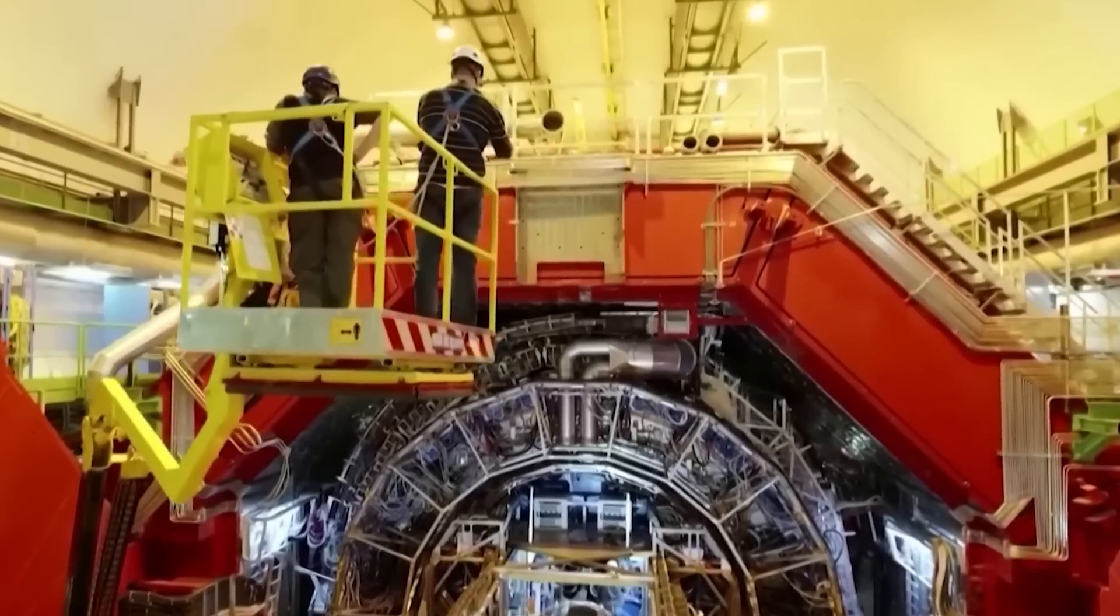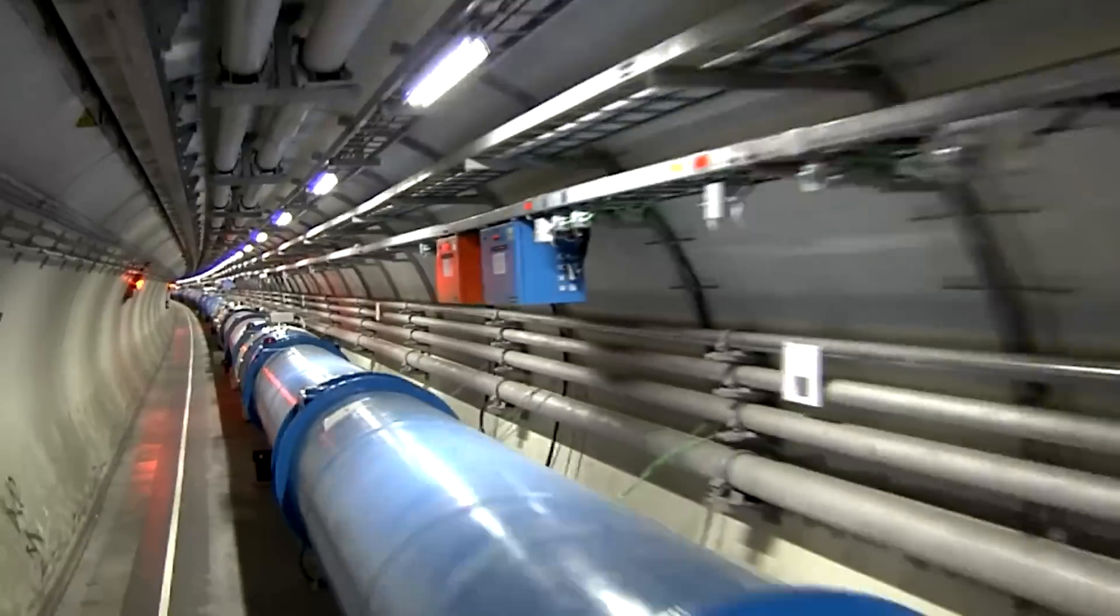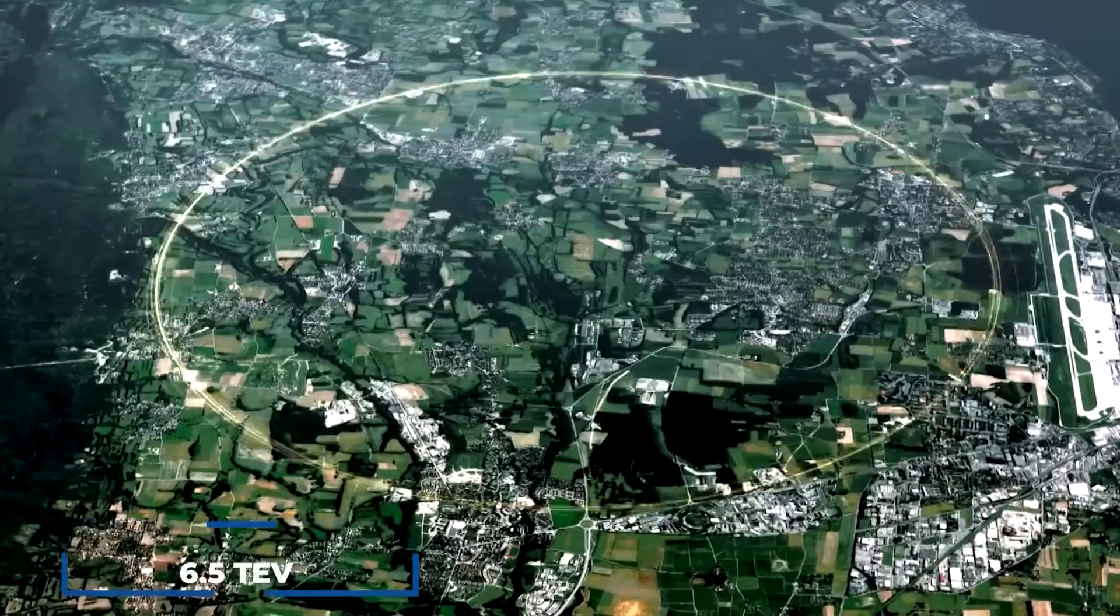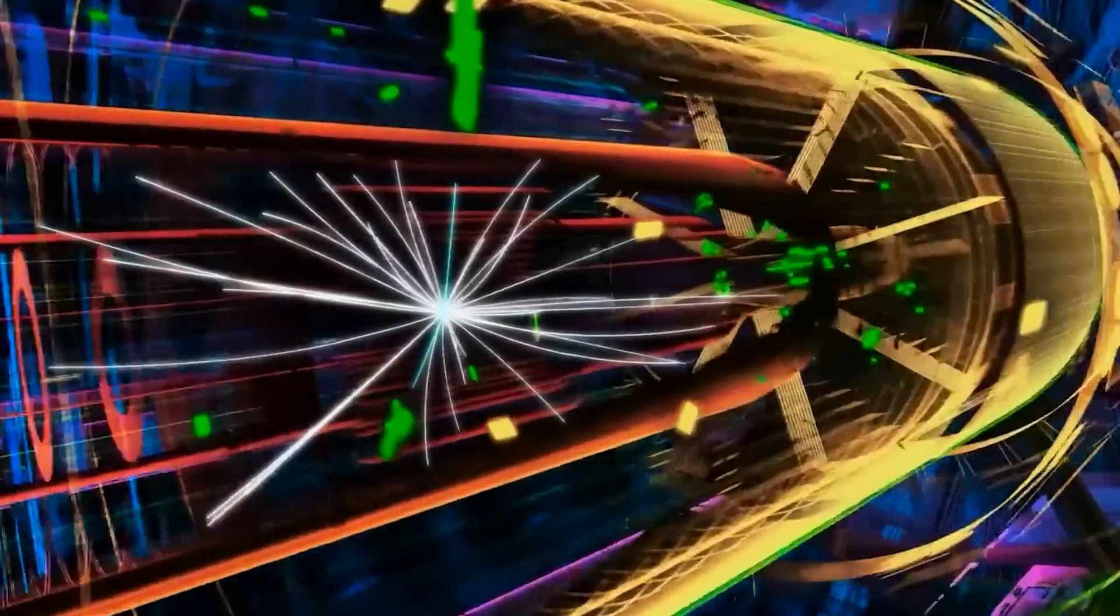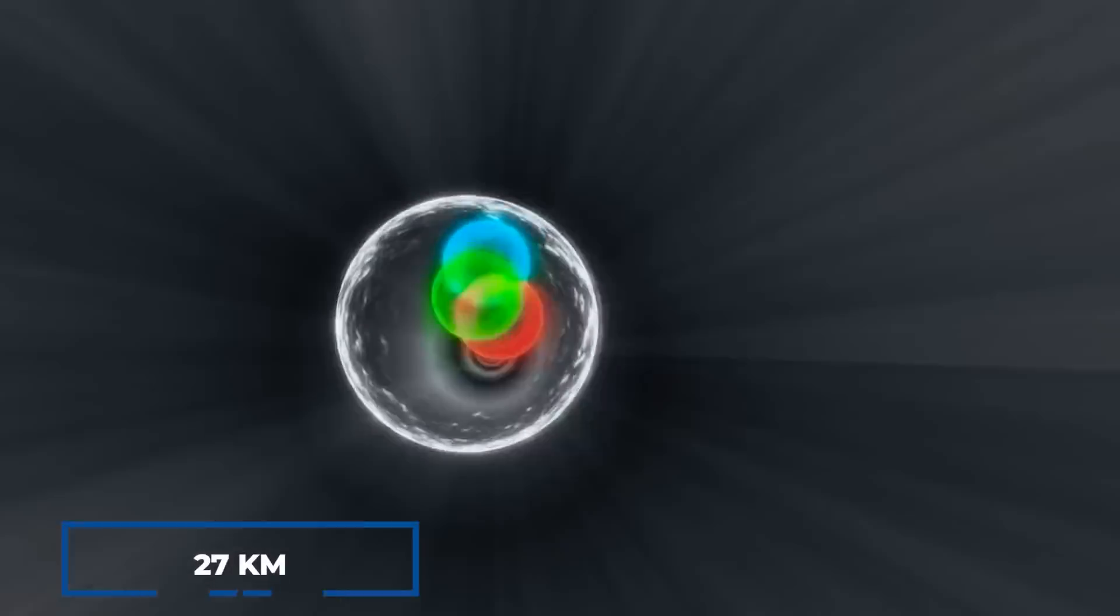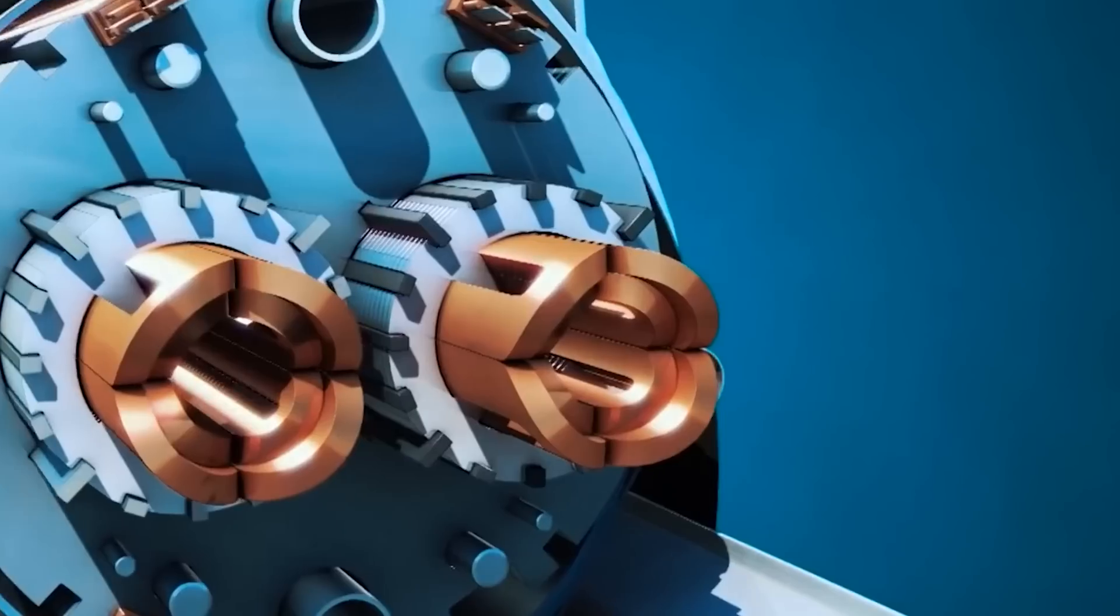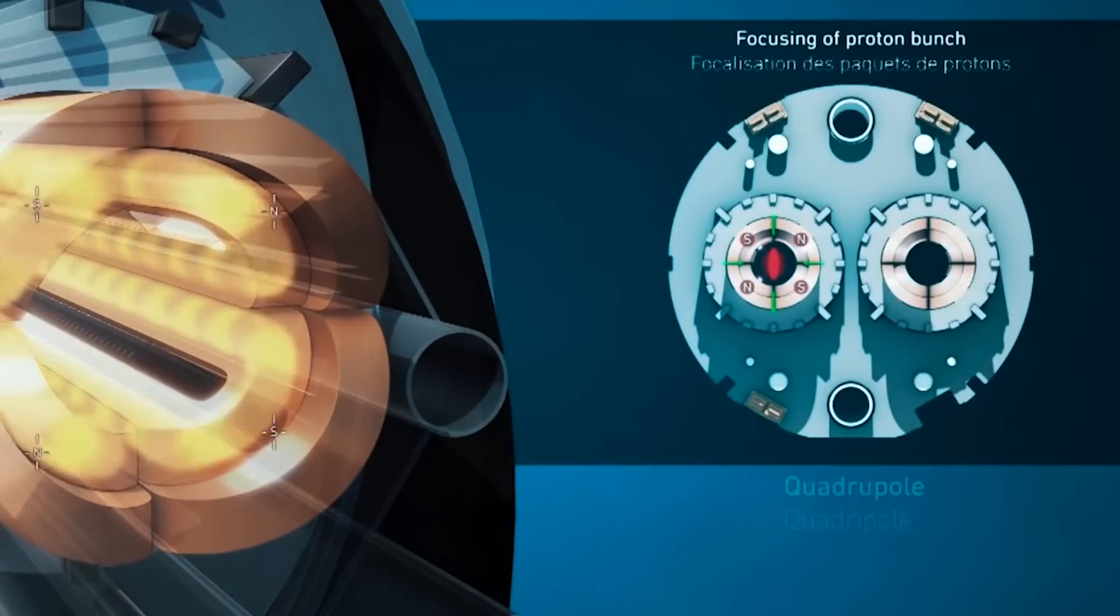Now let's delve into another mind-blowing revelation that has occurred at the CERN facility. The Large Hadron Collider, which currently operates at an impressive 6.5 TeV per beam energy, is a complex machine that propels trillions of particles around its 27-kilometer tunnel at lightning speed.